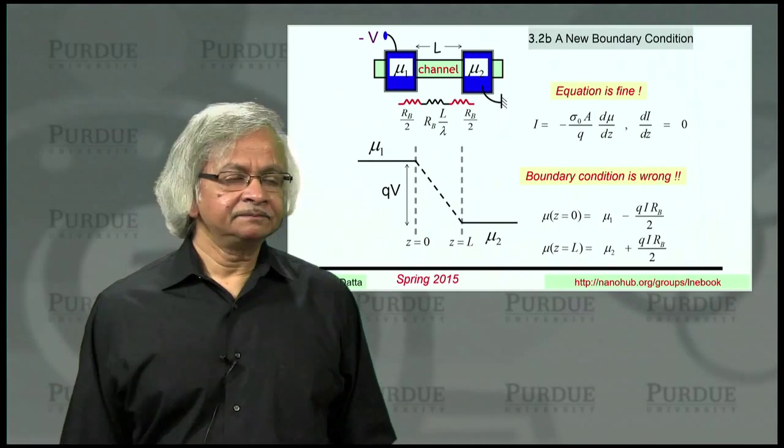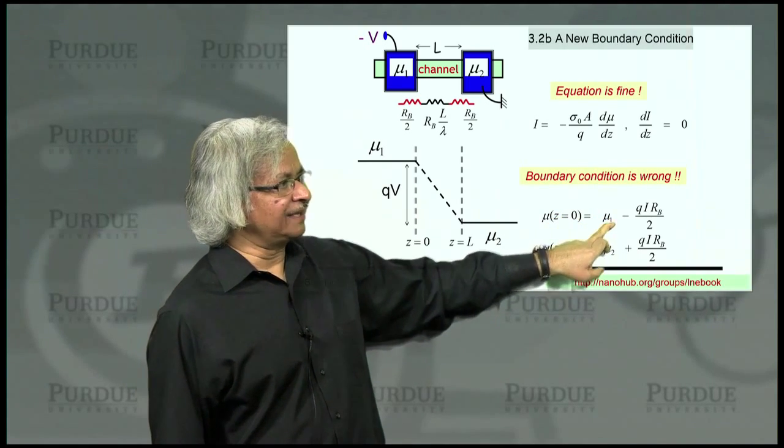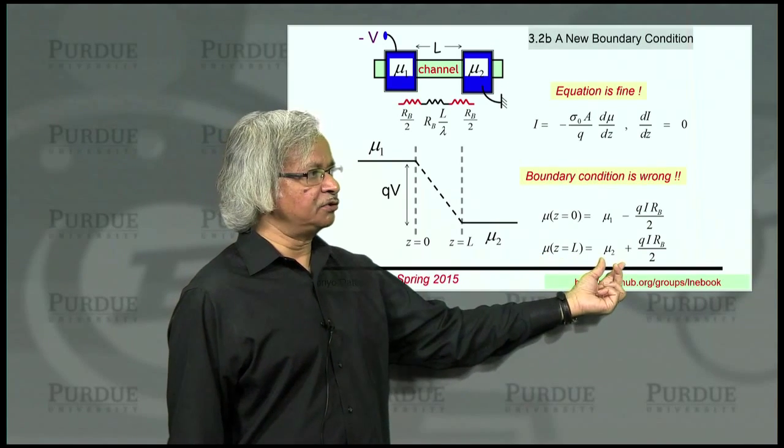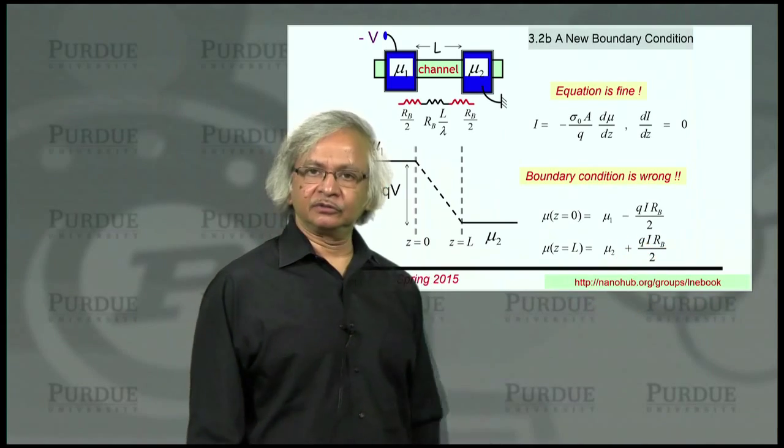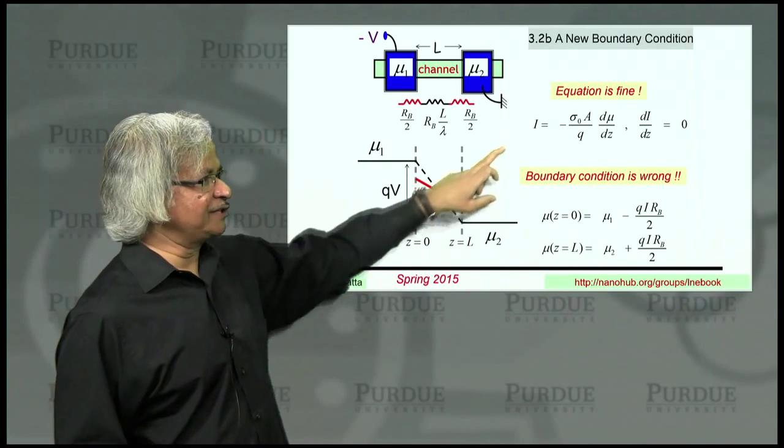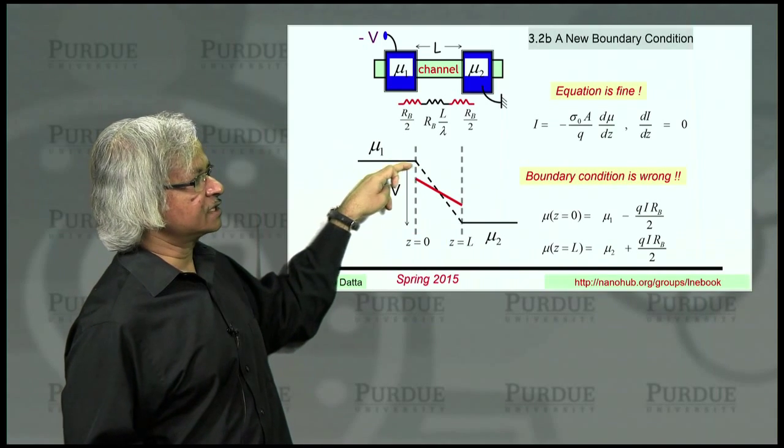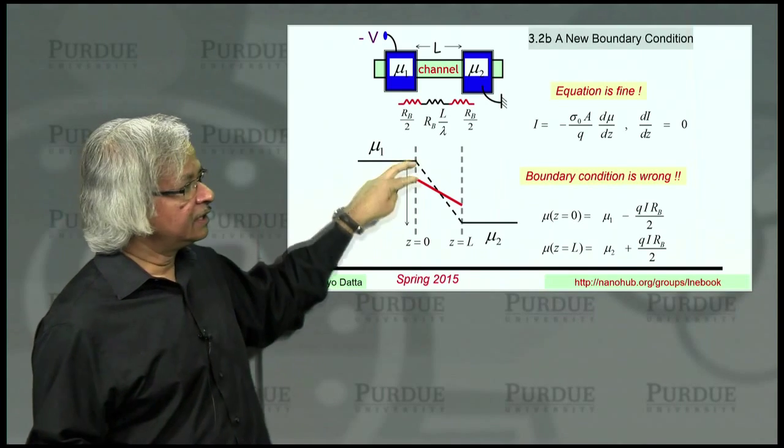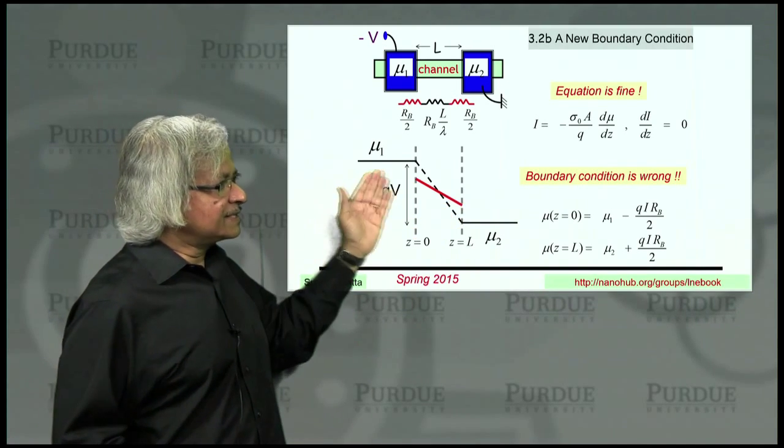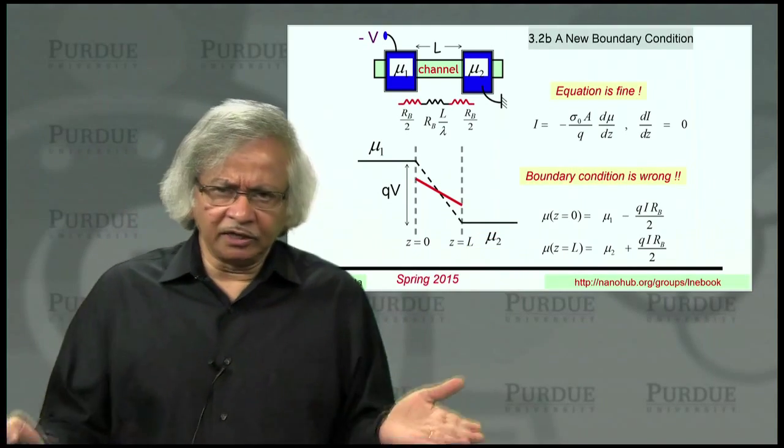Now, what we'd like to argue is that the correct boundary condition is that the electrochemical potential at z equals 0 is not mu 1 but a little less than that by an amount that is proportional to the current. And at z equals L, it isn't mu 2 but a little more than that. Again, by an amount proportional to the current. So when we draw this line inside the channel, the point is it's still a straight line because the straight line is required by the diffusion equation. So it's still a straight line. But it doesn't start at mu 1 and end at mu 2. It starts a little below. And how much below depends on the current. And it ends a little above. How much above depends again on the current, see? So this is the new boundary condition that we are arguing we should be using. And once you use that, what I'd like to show you is you do get the right answers.